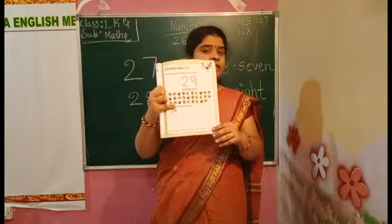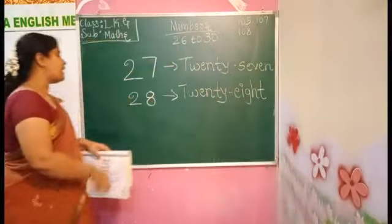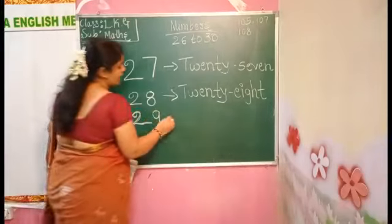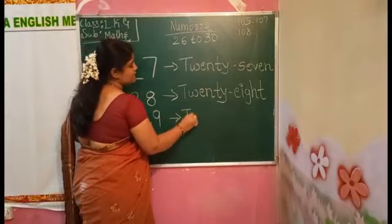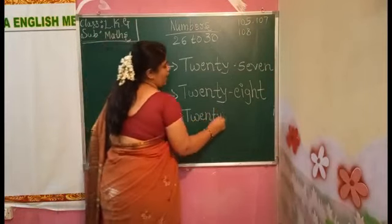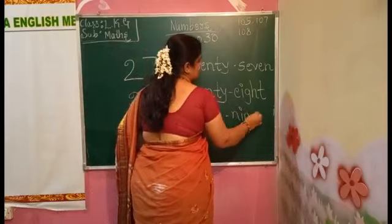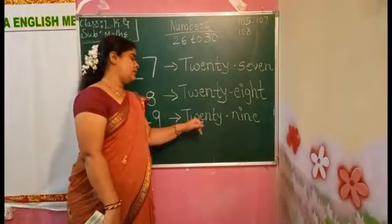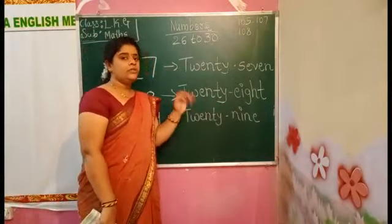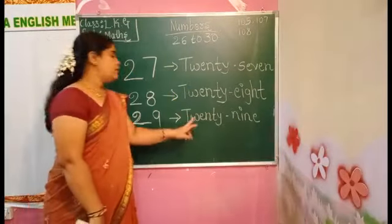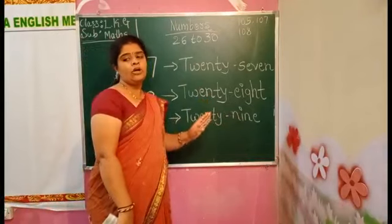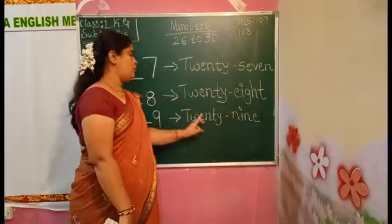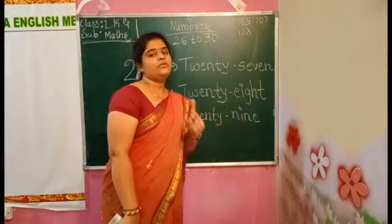The next number is 29. After 28, which number will we get? That is 29. 2-9, 29. The number name of 29 is T-W-E-N-T-Y-N-I-N-E. How we have to read? 2-9, 29. T-W-E-N-T-Y-N-I-N-E. 29. Like this we have to read. You have to say the full spelling: T-W-E-N-T-Y-N-I-N-E. 29.